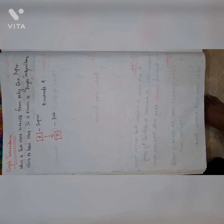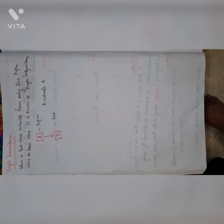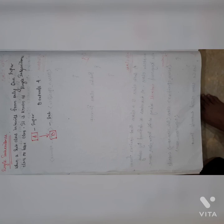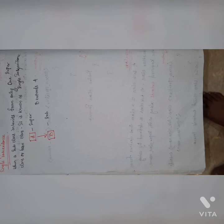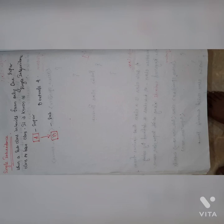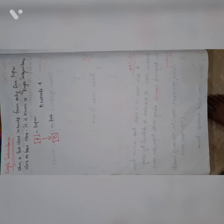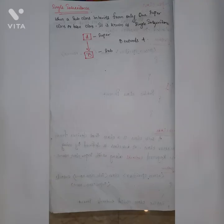When one subclass is inherited from only one superclass or base class, it is known as single inheritance. Here A is the superclass and B is the subclass derived from A, which means B has some or all of the properties of A, and may also have some unique features. The syntax will be: B extends A.